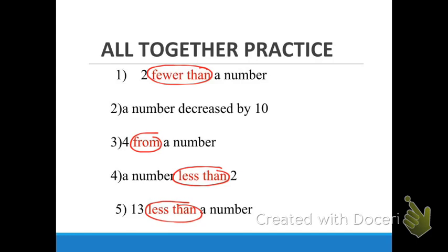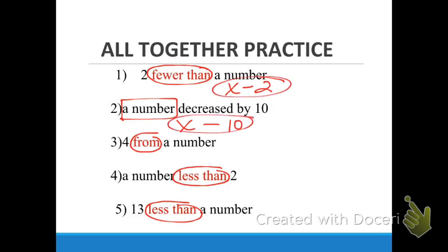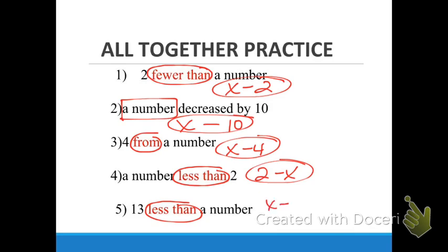Number two: 'a number decreased by 10' — so X minus 10. Number one: 'two fewer than a number' — X goes first, minus two, so X minus two. Number three: 'four from a number' — X minus four. Number four: 'a number less than two' — that's two minus X. And number five: '13 less than a number' — X minus 13.